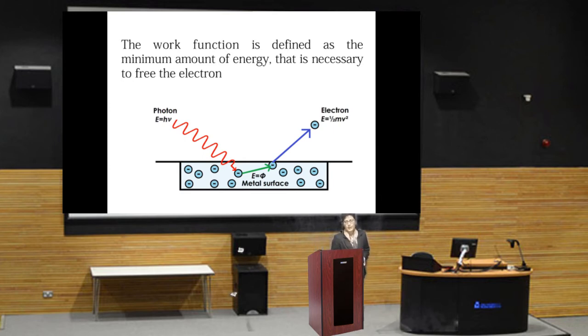In this figure, a photon is striking a metal plate and ejecting the electron with kinetic energy half mv squared. Energy of the photon that is striking the metal is h nu. E equals h nu of the photon and half mv squared is the energy of the electron.